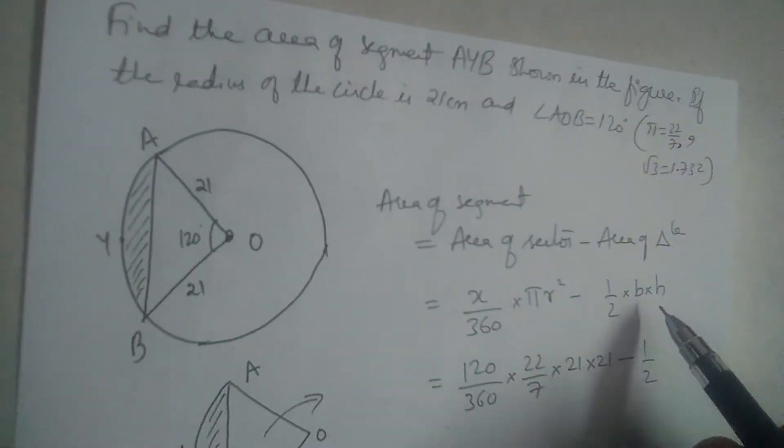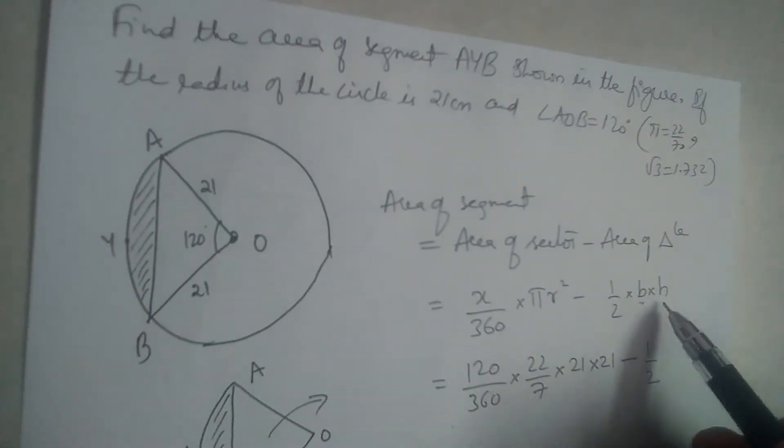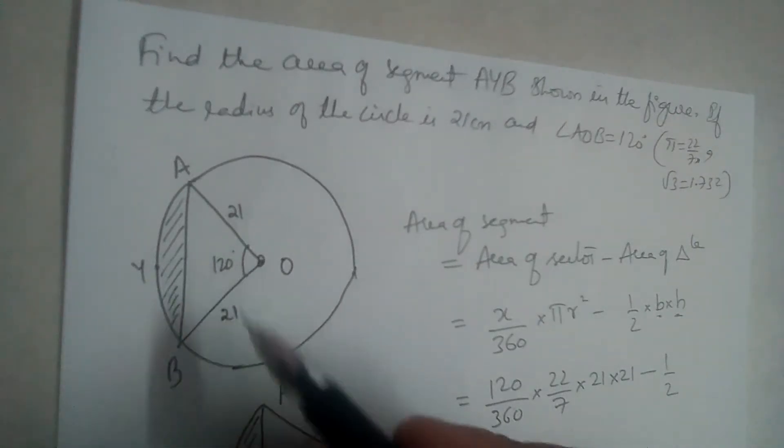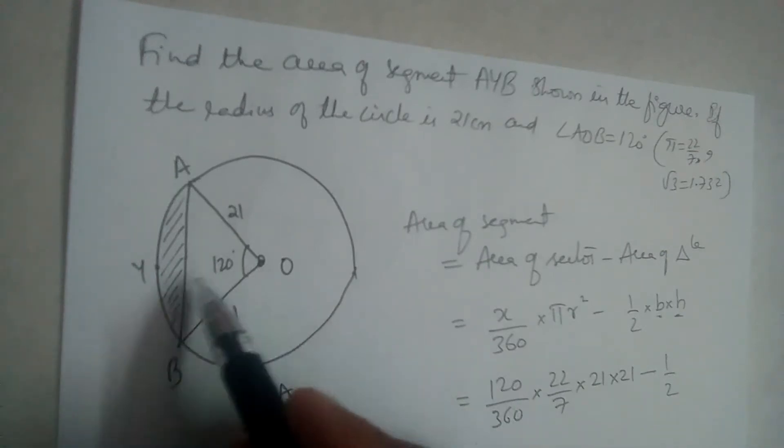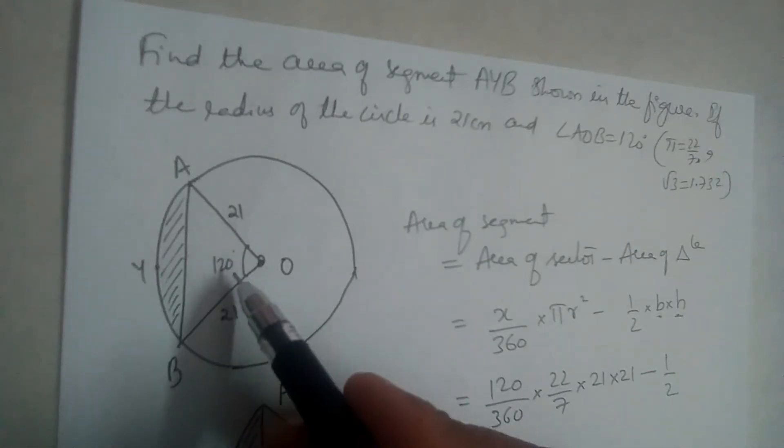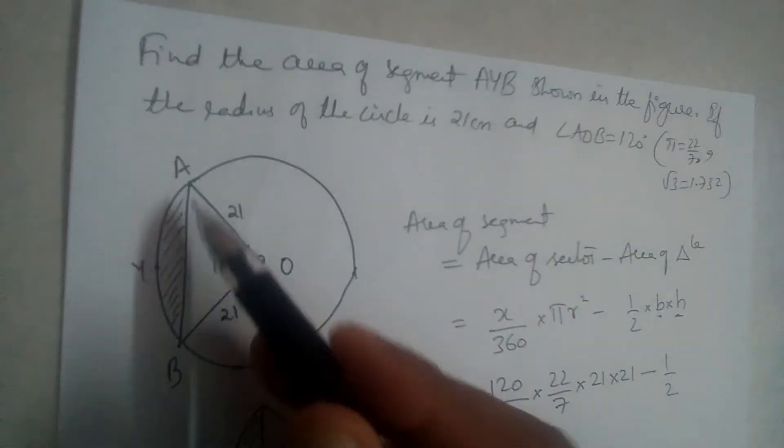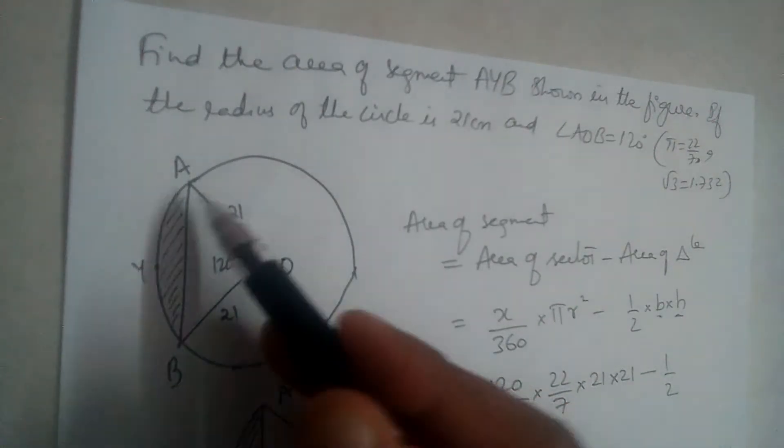Now the problem here is, we don't know what is base and height of this triangle. This is not 90 degrees, it is not a right angle triangle, so what should we do now? Let us find the base and height of this triangle.